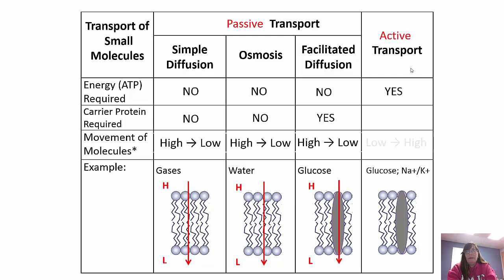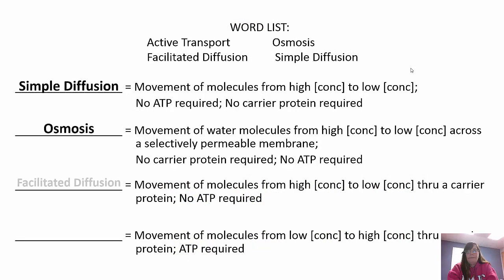You have a chart in your portfolio summarizing transport. For passive transport - simple diffusion, osmosis, or facilitated diffusion - no ATP is required. Carrier proteins are only required for facilitated diffusion, and all go from high to low concentration. Active transport requires energy, requires a carrier protein, and goes from low to high concentration. Simple diffusion: no ATP, no carrier protein, straight through the membrane - carbon dioxide, oxygen. Osmosis: movement of water from high to low, no carrier protein, no ATP. Facilitated: high to low through a carrier protein, no ATP. Active: low to high through a carrier protein, ATP required.